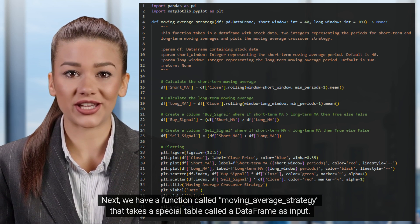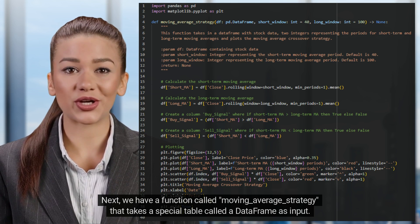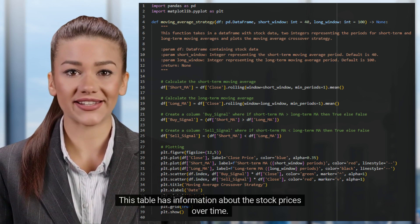Next, we have a function called moving_average_strategy that takes a special table called a data frame as input. This table has information about the stock prices over time.